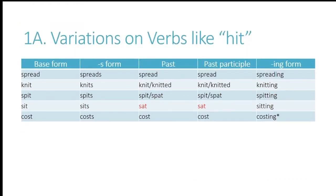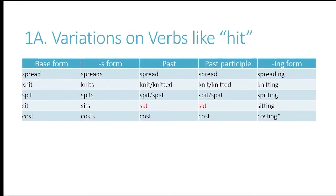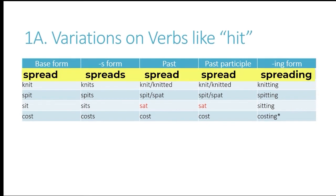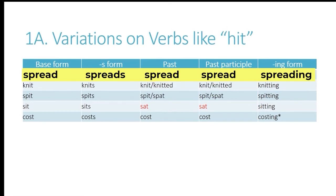Now we have some variations on verbs like hit. For example, with the verb spread, it follows the same pattern in that the past and the past participle are exactly the same as the base form: spread, spread, spread. The difference here is this one ends with a D sound, and in the ing form the D letter is not doubled.